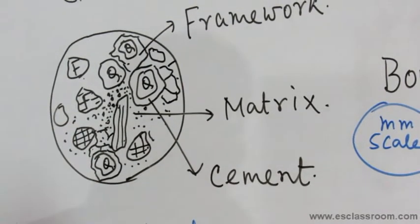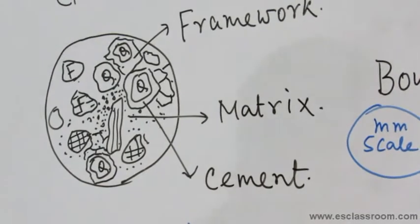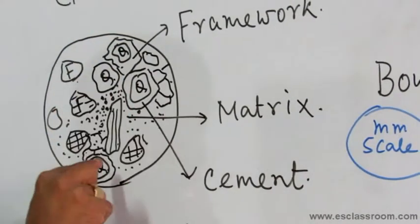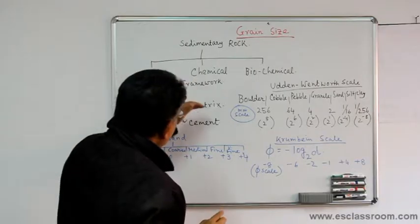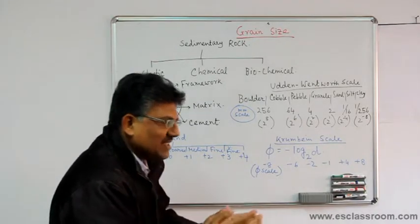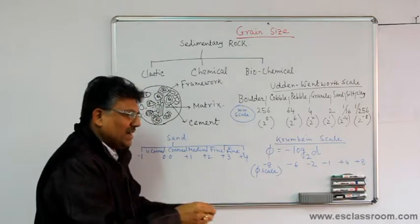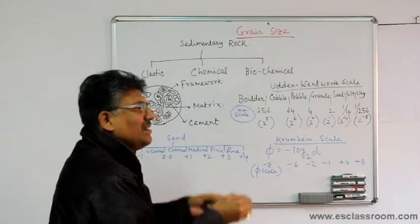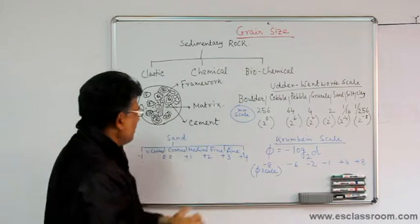There are some smaller grains which fill the space between the larger grains, also formed and transported along with the framework grains — we call that the matrix. There are also other materials filling the space between the larger grains that we call the cement. So framework and matrix are two transported materials of different grain size.